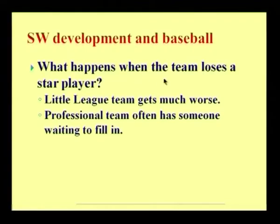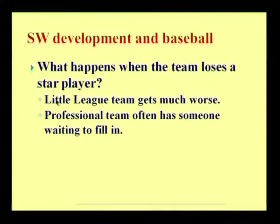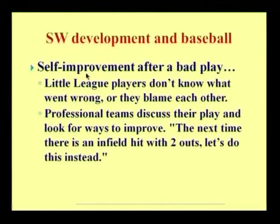The third constraint asks what happens when a team loses the star player. If the entire team loses that particular star player, a little league team gets much worse because he is the one who actively leads the team. A professional team often has someone waiting to fill in. Regarding self-improvement after a bad play, a little league player does not know what went wrong or they blame each other. A professional team discusses their play and looks for ways to improve — saying, next time there is an infield hit with 2 outs, let us do this instead.